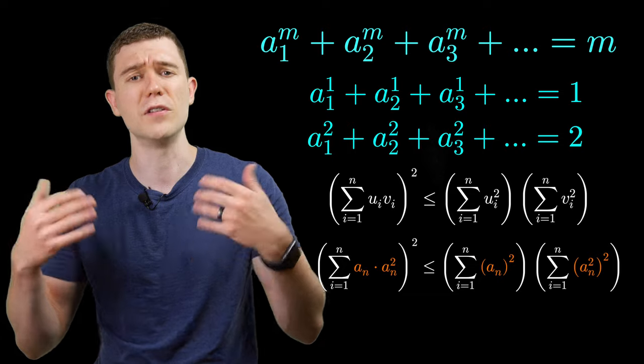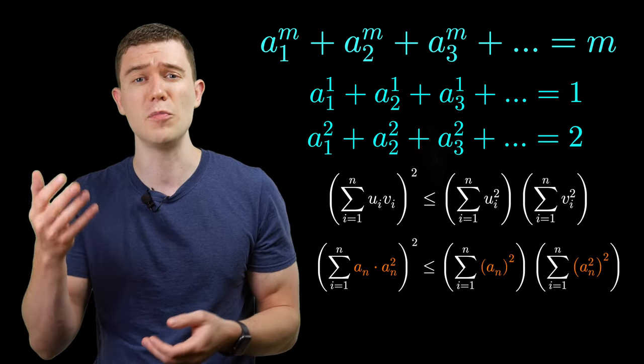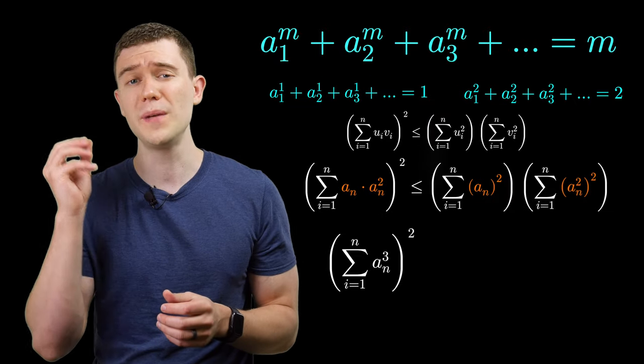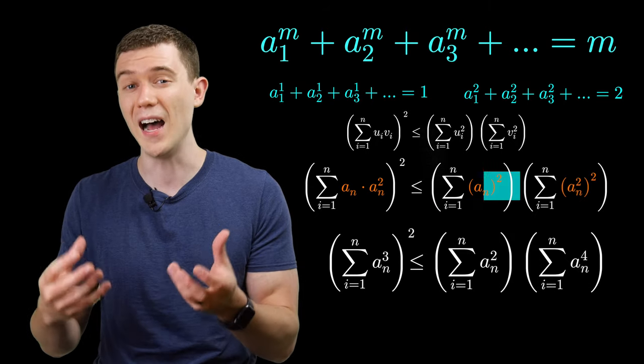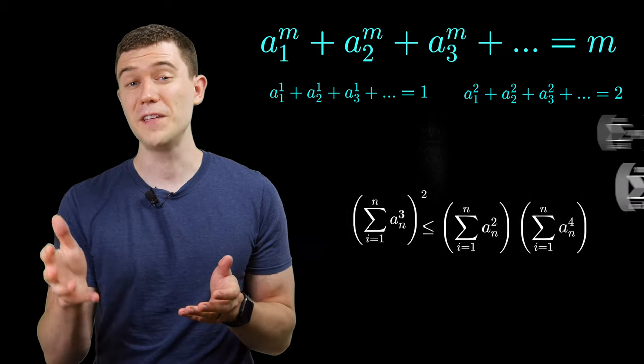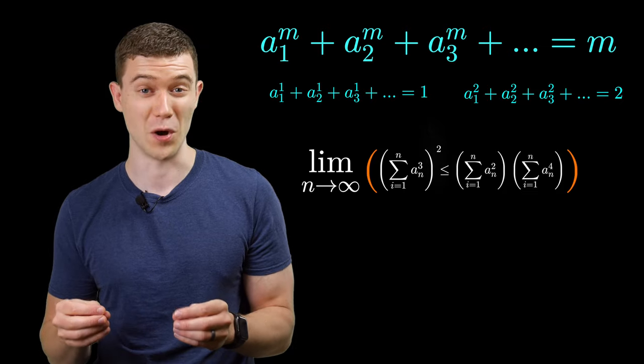We'd have a sub n to the first times a sub n squared. Properties of exponents, that would be a sub n to the third. And according to our inequality, this should be less than the sum of a sub n to the first squared, times the sum of a sub n squared squared. If this proposed infinite sequence did exist, we know how to sum these quantities.